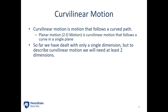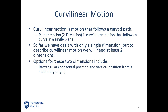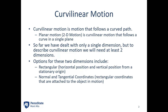We dealt with two dimensions using rectangular systems, and this is going to be another way to deal with 2D motion. With our rectangular coordinate system, we have a fixed origin point and a fixed axis, and we measure the particle moving relative to that fixed axis. With our normal tangential coordinates, we're going to have our coordinate system fixed to the object that is moving, so the coordinate system moves with the object and rotates as that object rotates.